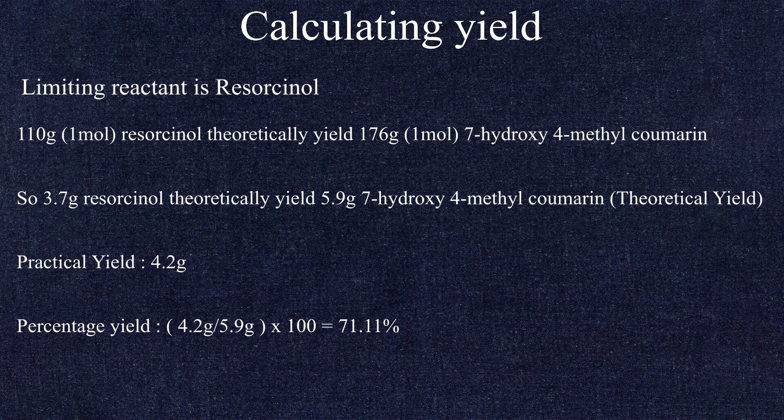3.7 grams of resorcinol should theoretically yield 5.9 grams of 7-hydroxy-4-methylcoumarin. So the theoretical yield is 5.9 grams.